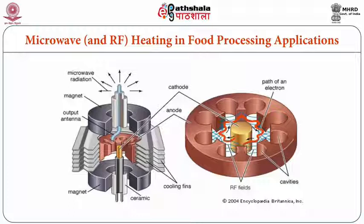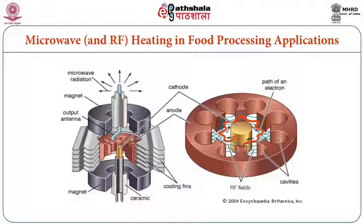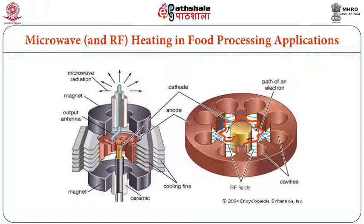In the picture, you can see how the microwave heating system works and what components are present. Microwave heating is a closed system in which a magnetron is present. You can see very clearly there is an anode, cathode, magnets, and microwave radiation — also cooling fins, output antenna, and ceramic magnet. These are the components inside the magnetron. From the magnetron, this frequency is passed through the food and the food gets heated due to magnetic resonance and molecular frictions, then it starts developing heat.